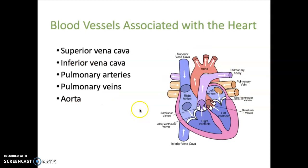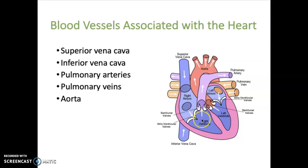For the major blood vessels associated with the heart: the superior vena cava carries blood returning from the upper body into the right atrium. The inferior vena cava comes up from below, carrying blood returning from the lower body to the right atrium. The pulmonary arteries carry blood from the right ventricle toward the lungs. The pulmonary veins carry blood from the lungs to the left atrium. And the aorta, the largest blood vessel in the body, carries blood from the left ventricle out to all body structures.